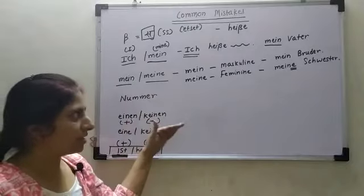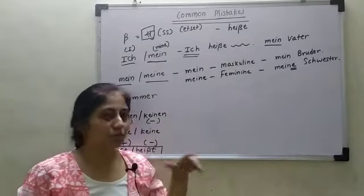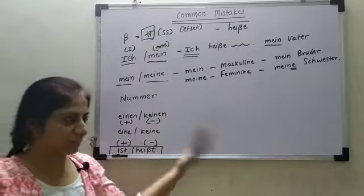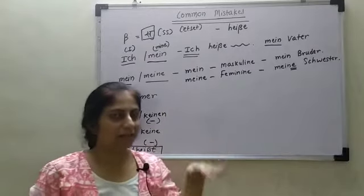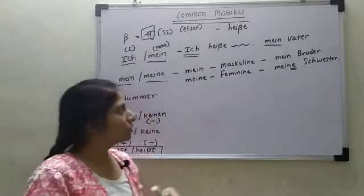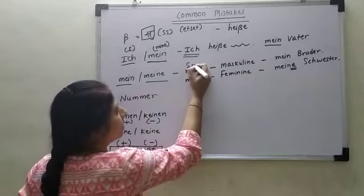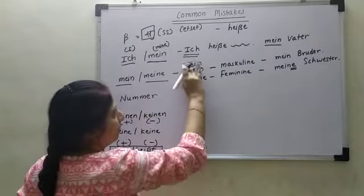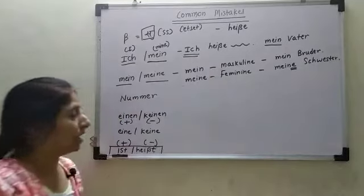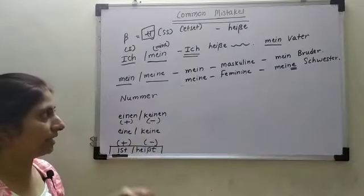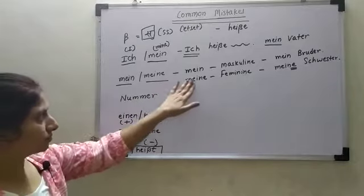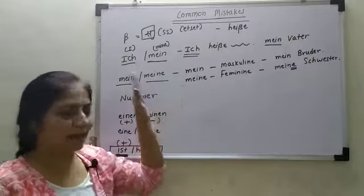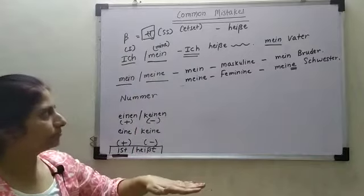Just remember this and try to avoid these errors when you speak. The same rule applies for 'sein' and 'ihr' — 'sein' means his and 'ihr' means her. 'Sein' we use for masculine and 'ihr' we use for feminine. I will make another video for that. But right now, just remember the difference between 'mein' and 'meine.'